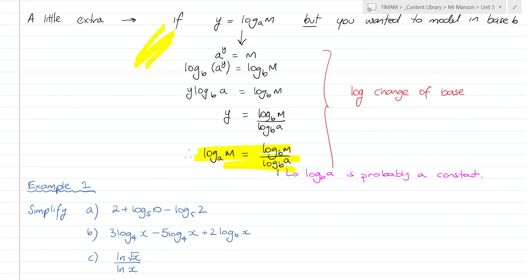So log base a of m is equal to log base b of m over log base b of a. And that's the reversion there. Convert that into exponential form, take a log base b of both sides, which you can do because it's an equation. Use that log law to bring the power down. Divide through so you've got y is equal to that. And then we already know that y was equal to that originally, so we put that into conversion. That's the change of base rule.